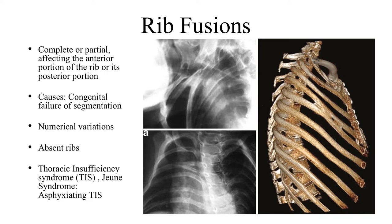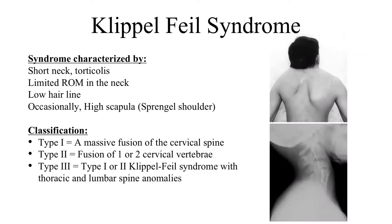Rib fusions are common occurrences with congenital scoliosis, resulting from failure of segmentation of ribs. You can have missing ribs or extra ribs. In severe forms, it is called thoracic insufficiency syndrome, such as Jarcho-Levin syndrome. These cases are best treated by expansion of both the chest and the scoliosis using vertebral expandable prosthetic titanium ribs (VEPTR), which we will discuss at the end of the treatment section.